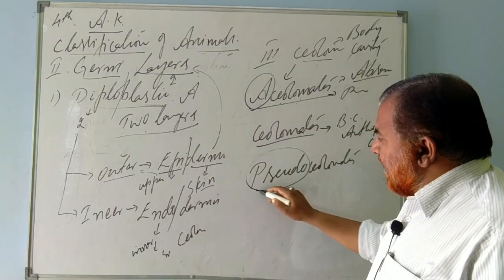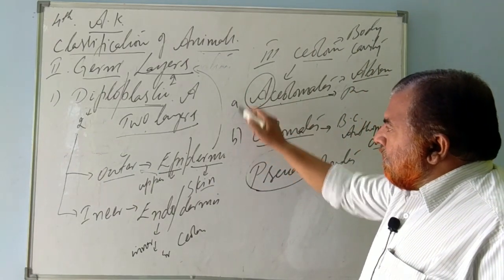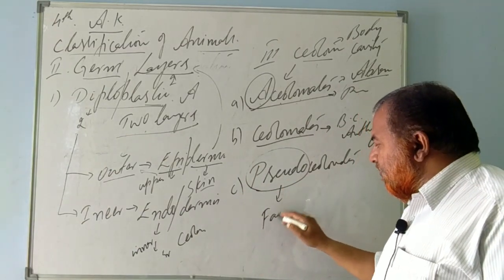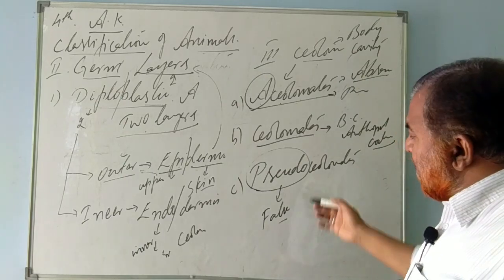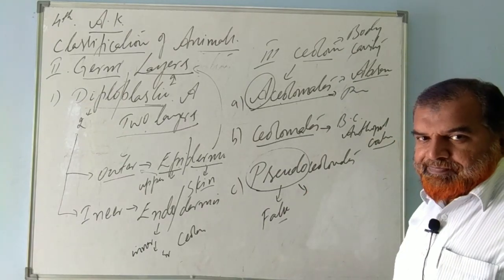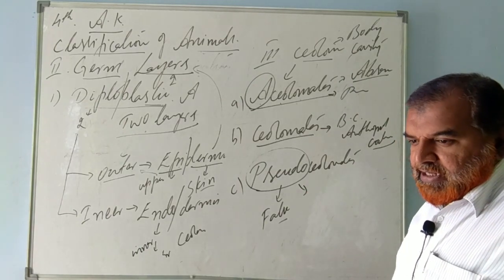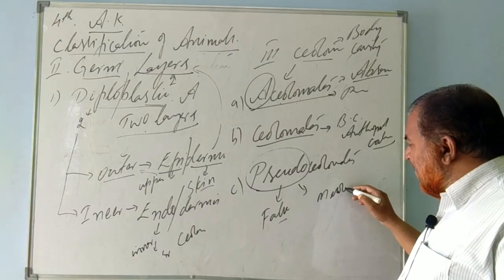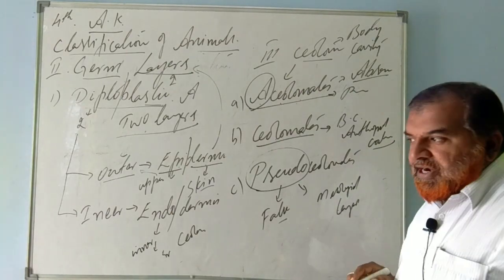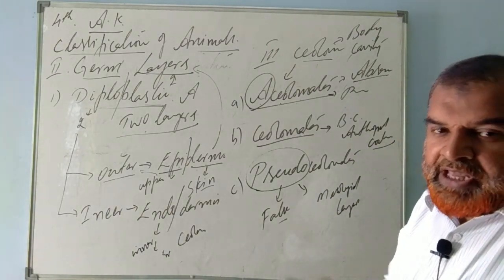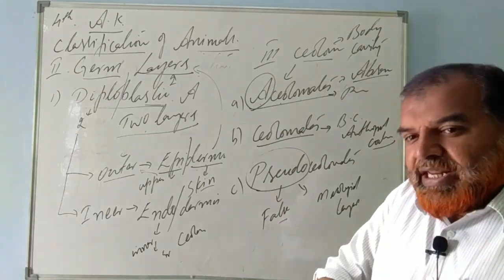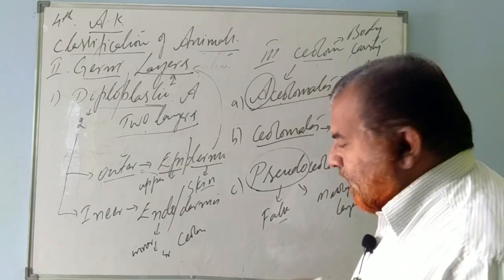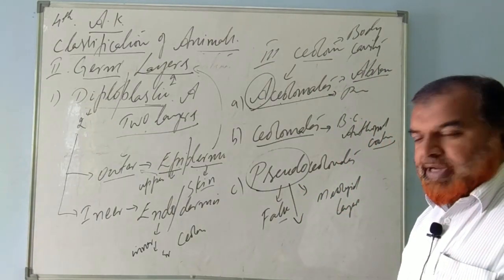The third type is pseudocoelomates. 'Pseudo' refers to false — a false cavity. These animals don't actually have a true body cavity, but it looks as though they do because of parenchyma cells or a mesoglea layer in between. It appears as if they have a body cavity, but they don't have a true coelom. Such animals are known as pseudocoelomates.